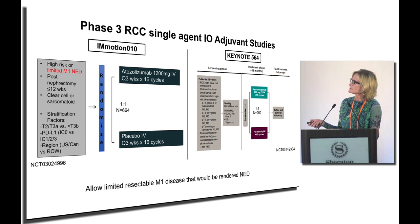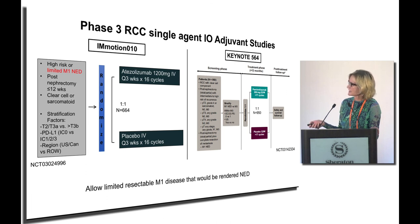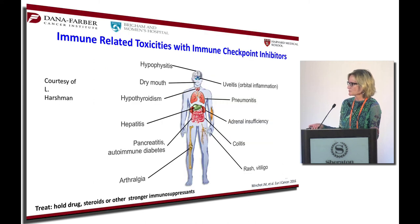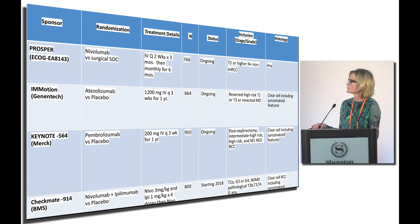The EMOTION trial uses atezolizumab every three weeks for a year in clear cell kidney cancer. Keynote has a pretty similar design using Keytruda or pembrolizumab. For the Checkmate trial using ipilimumab and nivolumab versus placebo, patients receive the drugs every six weeks rather than three weeks and for six months rather than a year, but they're getting two drugs rather than one.